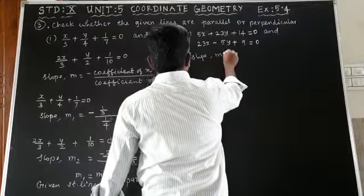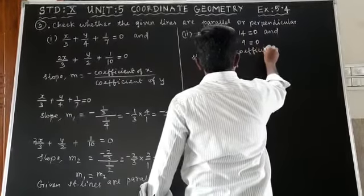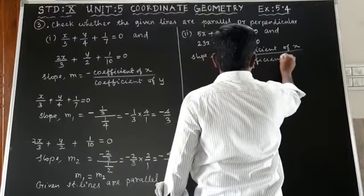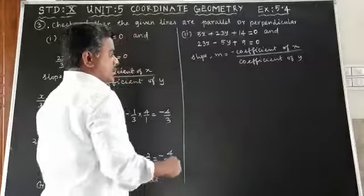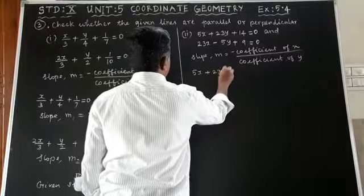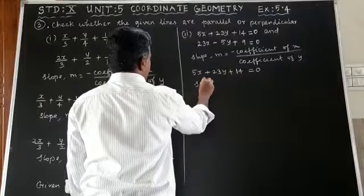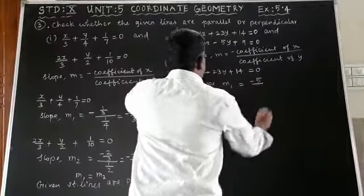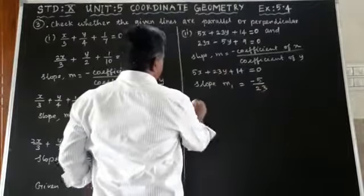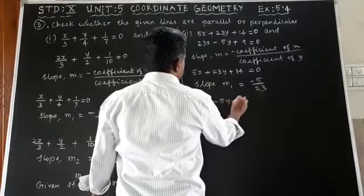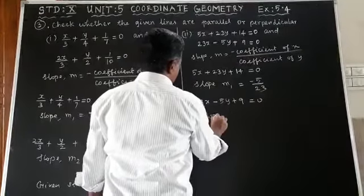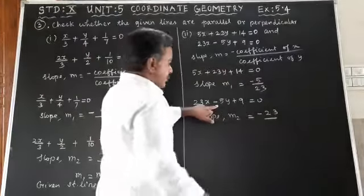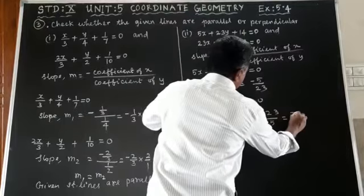For the next problem, slope m is equal to minus the coefficient of x divided by the coefficient of y. So m1 is equal to minus the coefficient of x, which is 5, divided by the coefficient of y, which is 23, giving m1 = -5/23. For the second equation 23x - 5y + 9 = 0, slope m2 is equal to minus the coefficient of x, 23, divided by the coefficient of y, -5. The two negatives cancel, giving m2 = 23/5.